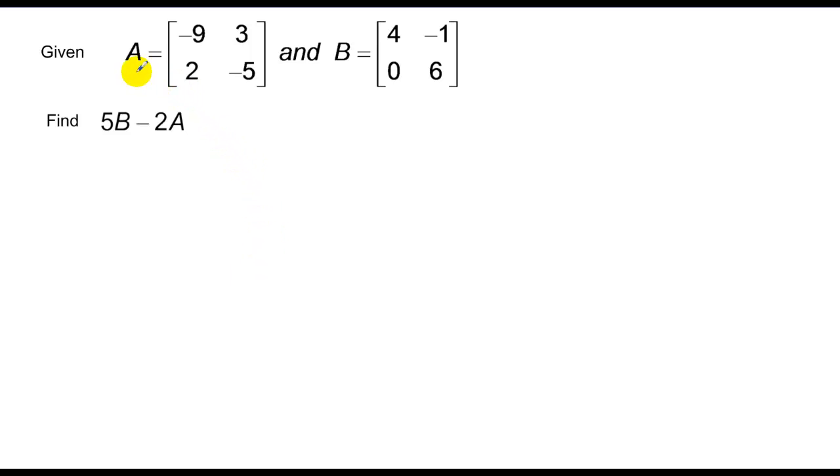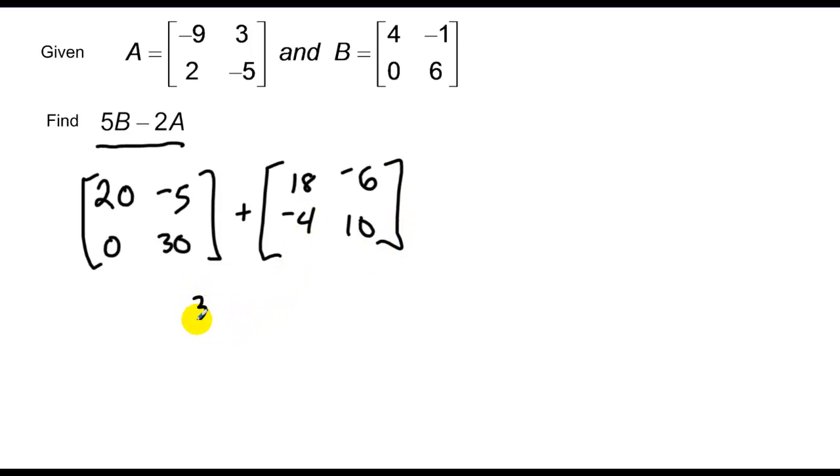Here's a case where I have two matrices given, and they ask to combine the matrices in this way. I want to take 5B first, which gets me 20, 0, negative 5, 30, and subtract that by negative 2A. I'm going to add, because I'm going to distribute negative 2 through, so that's 18, negative 4, negative 6, 10. These dimensions are equal, so I go ahead and add, and I get 38, negative 11, negative 4, and 40.